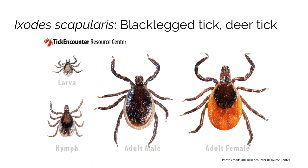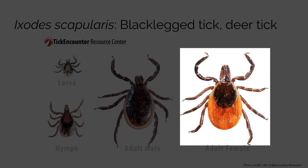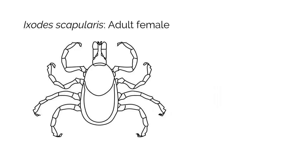The first species we will cover is Ixodes scapularis, also known as the black-legged or deer tick. Let's focus on the adult female first. There are three body parts of the tick that can be useful in photo identification: the mouthparts, the scutum, and the alloscutum. Let's take a closer look.